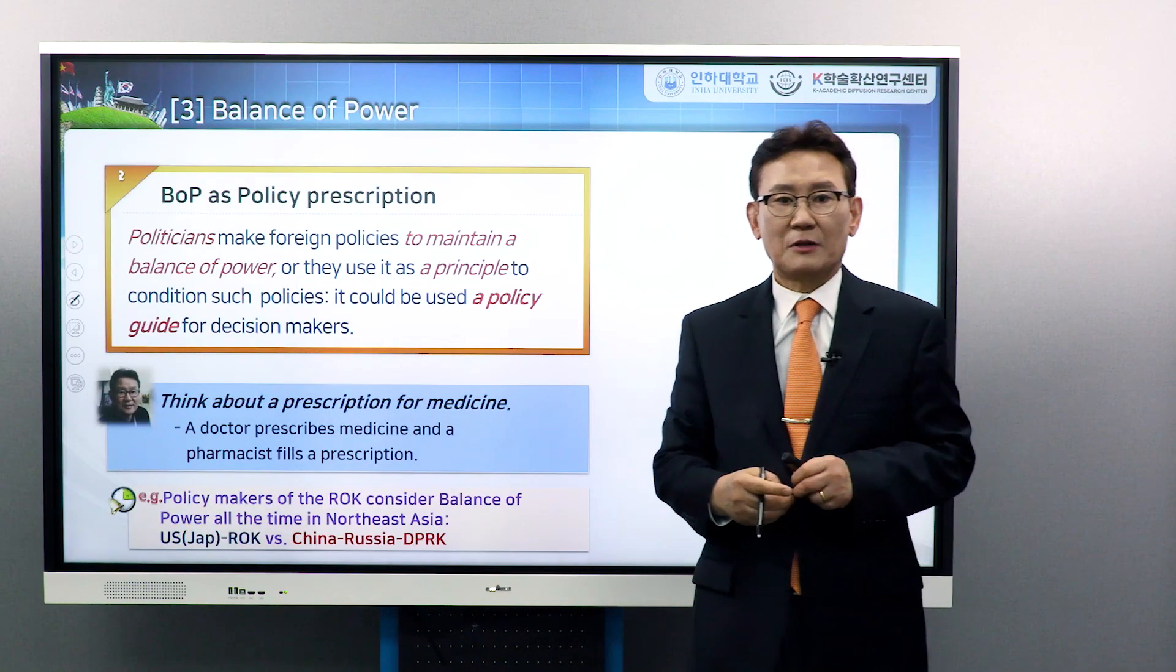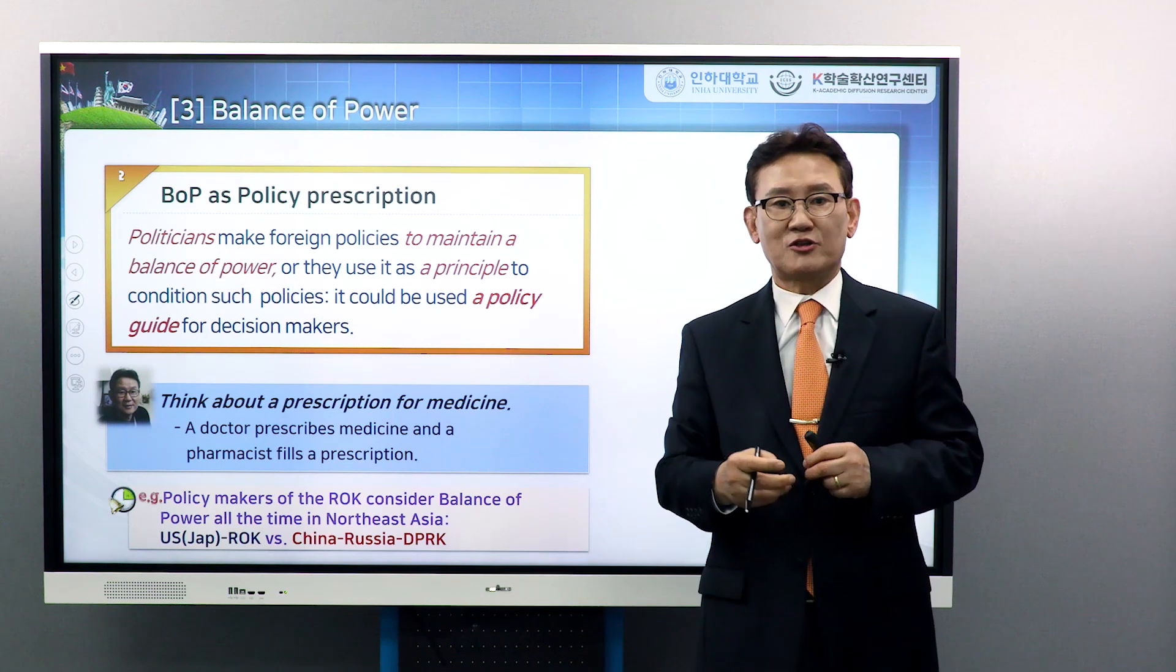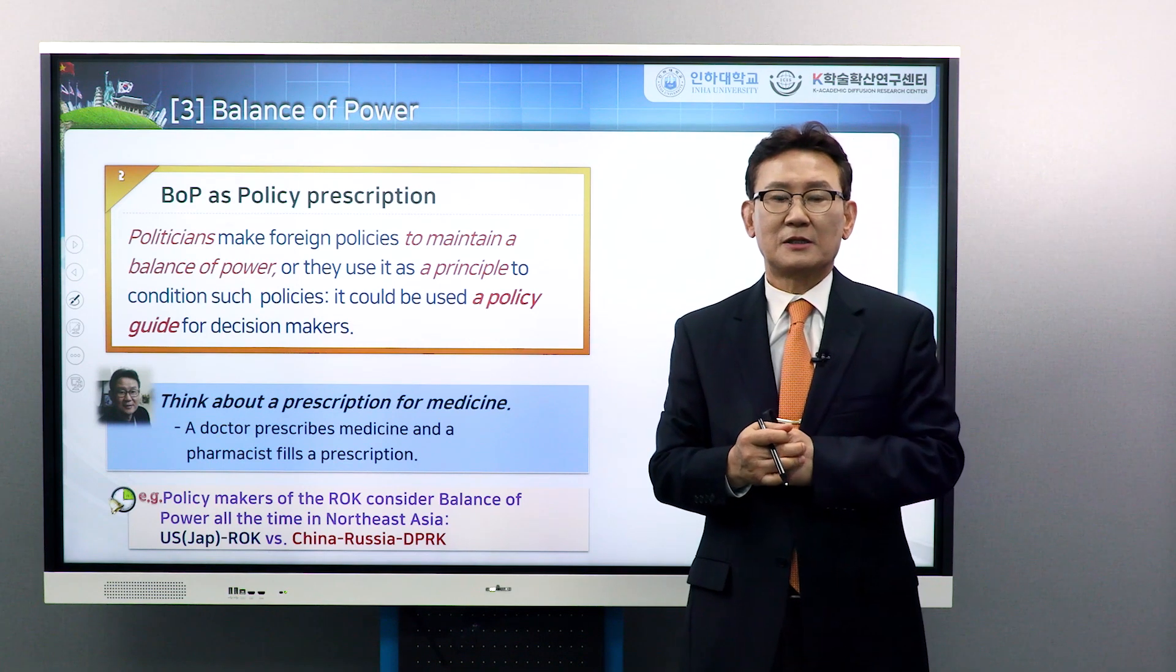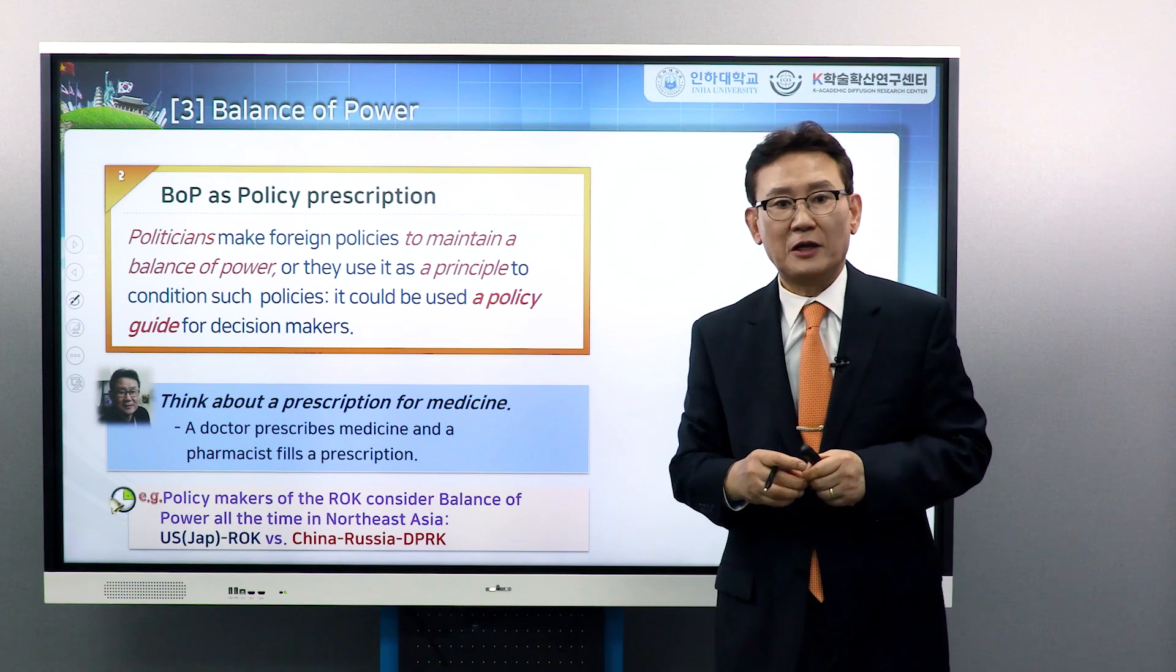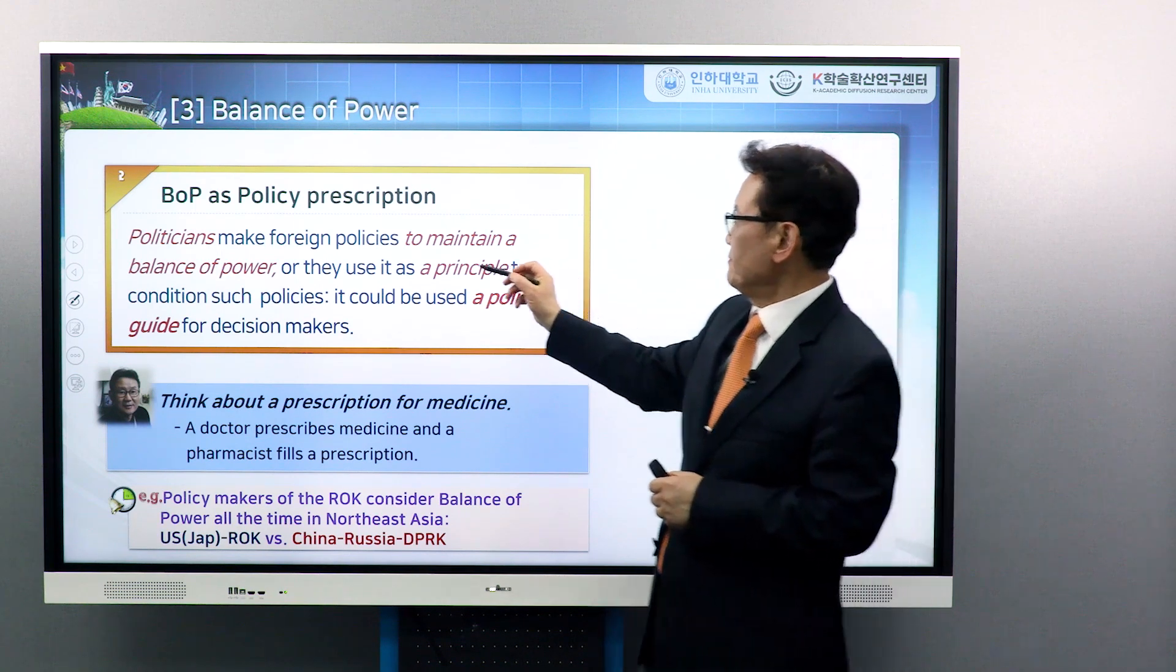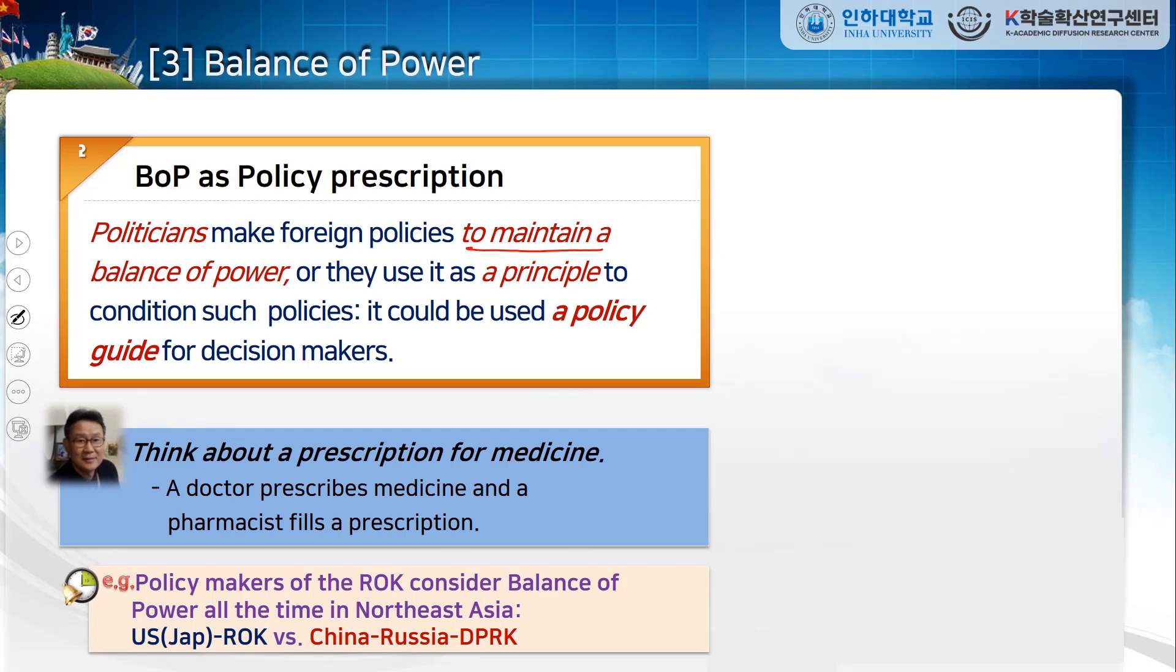Now, balance of power is policy prescription. So politicians make foreign policies in order to maintain a balance of power, or they use it as a principle to condition such policies. It is a policy guide for decision makers.